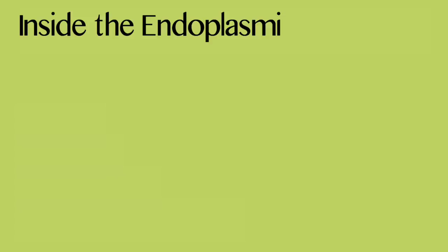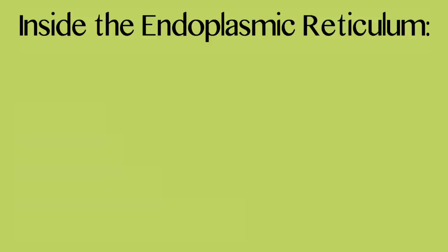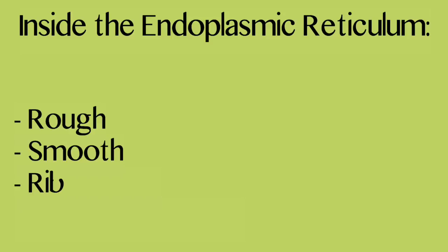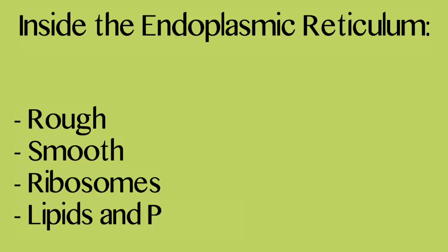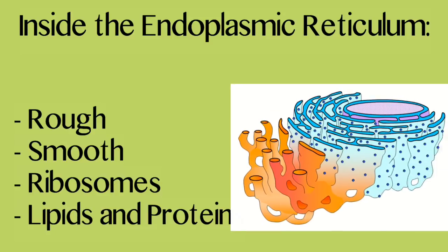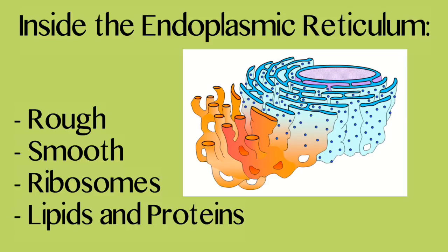The nucleolus in the nucleus is a dense region where RNA can be found for the process of assembling proteins. Let's talk about the endoplasmic reticulum, also known as the ER. The rough ER is covered in ribosomes and transports proteins through vesicles. The smooth ER isn't covered with ribosomes and will break down drugs, alcohol, and other poisons, as well as make lipids.